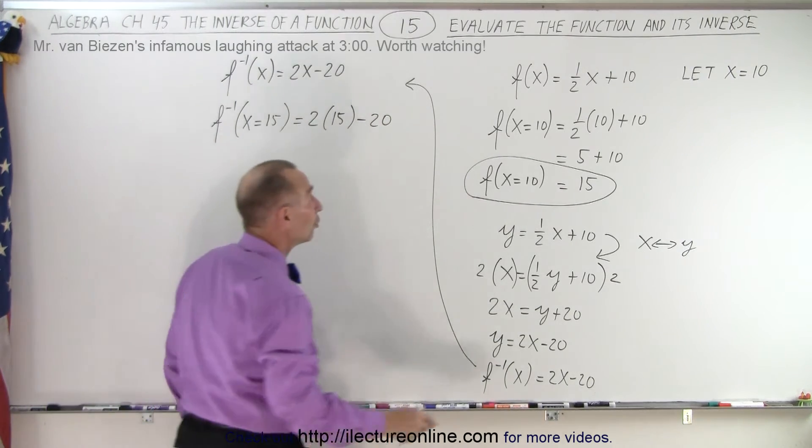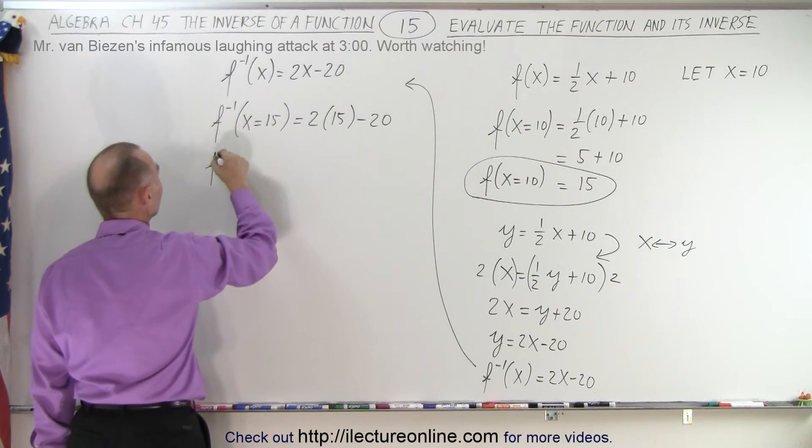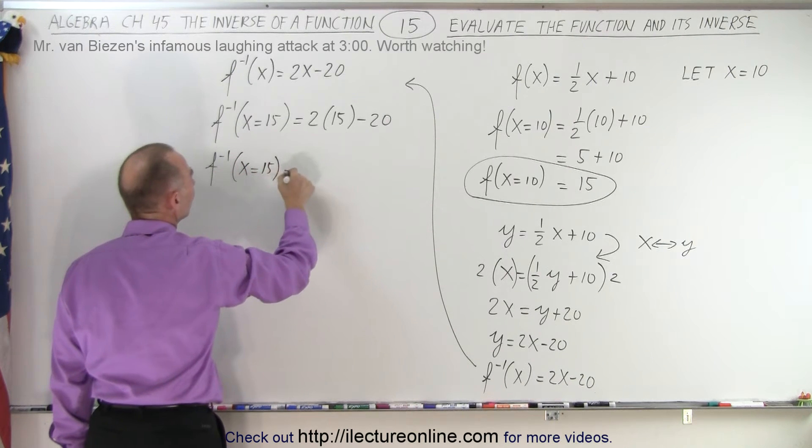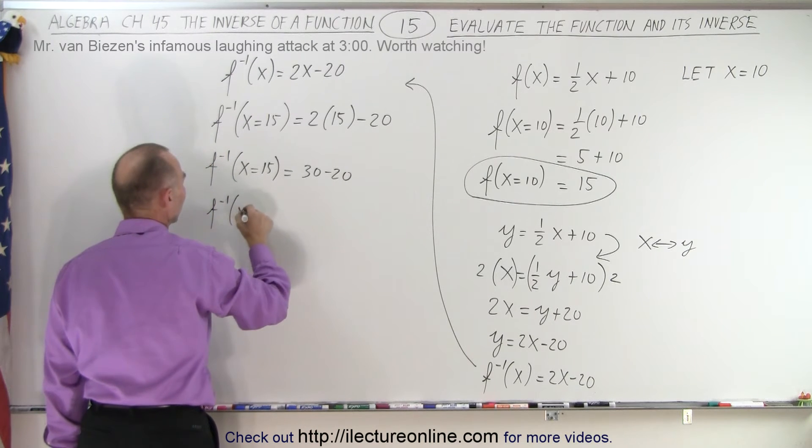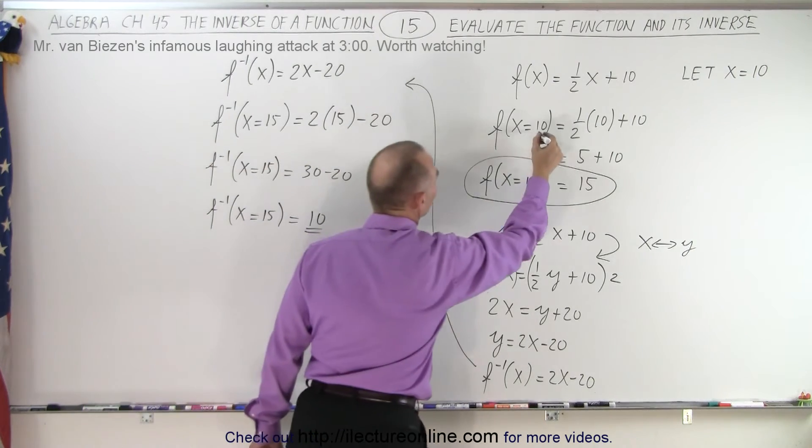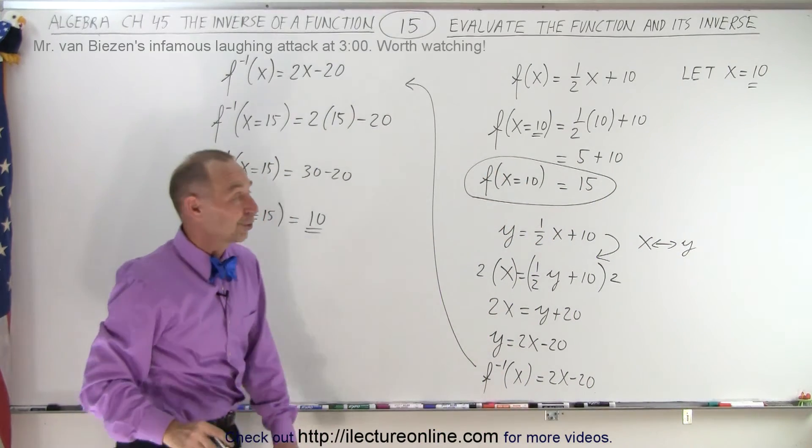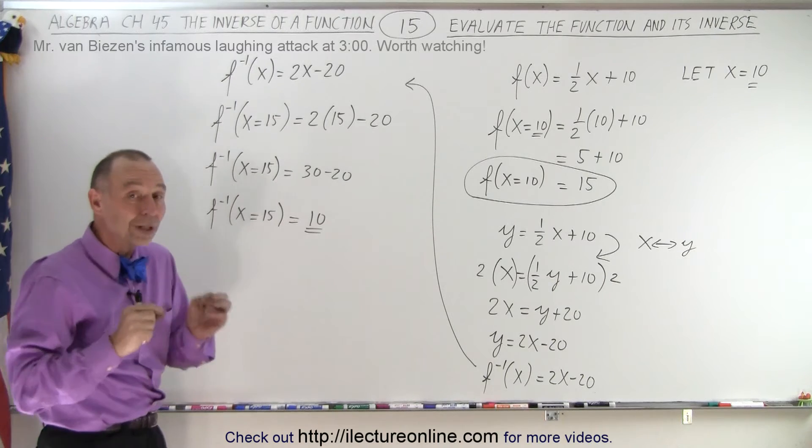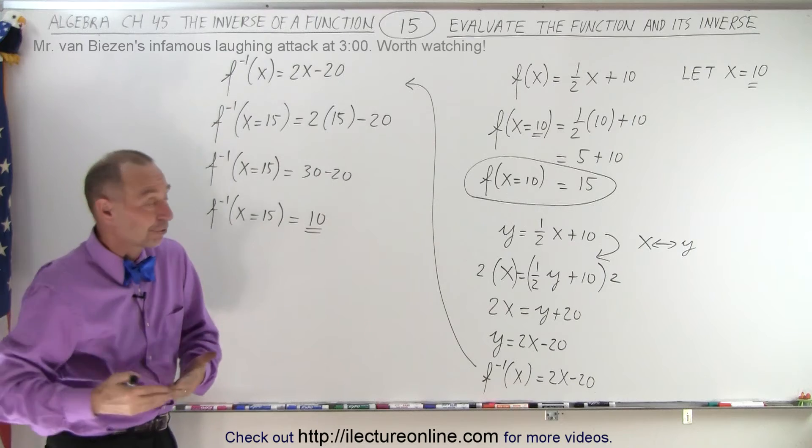We expect that to be equal to the number that we plugged into the function in the first place. So let's see if that's correct. The inverse of the function when x equals 15 is equal to 30 minus 20. And so the inverse evaluated at x equals 15 is indeed equal to 10, which is the very same value that we plugged in at the very beginning in the original function. So it looks like we did it correctly.